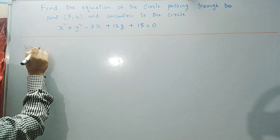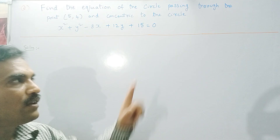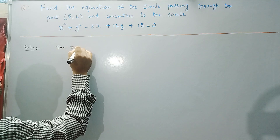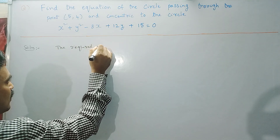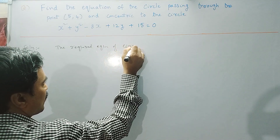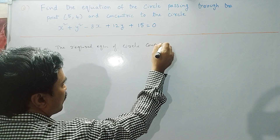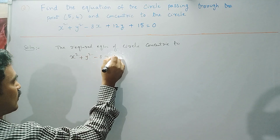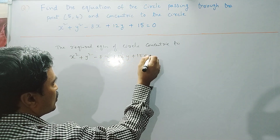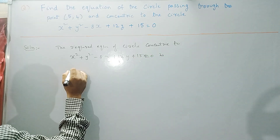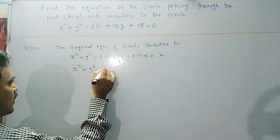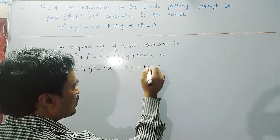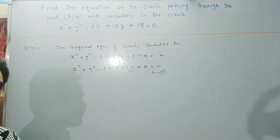Step 1: Write the required equation of the circle concentric to the given circle. The required equation of a circle concentric to x² + y² − 8x + 12y + 15 = 0 is x² + y² − 8x + 12y + k = 0. Only the constant term differs, so we write plus k equal to 0. This is our required equation — call it equation number 1.